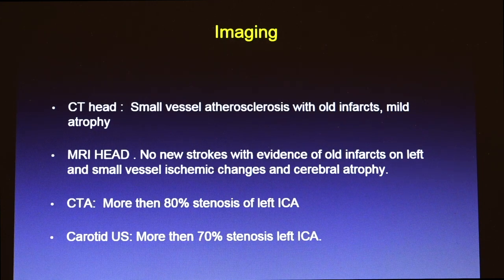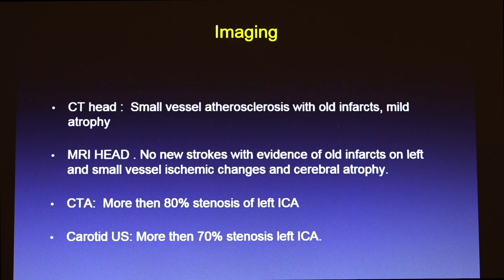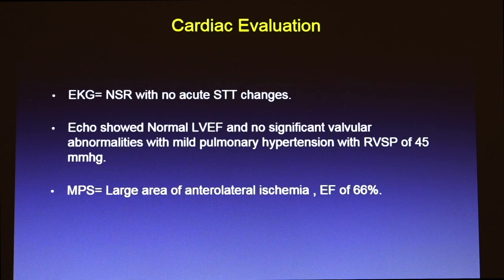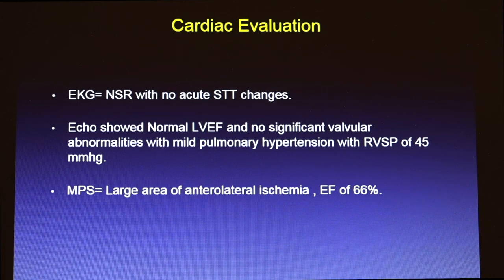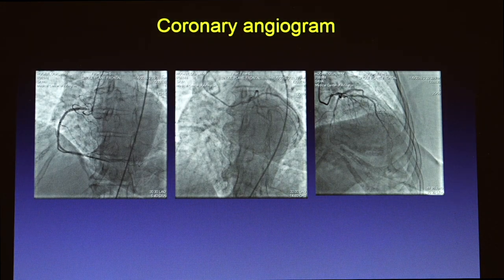CAT scan of the head showed no acute stroke. MRI suggested small vessel disease. CT angiogram of the neck suggested 80% stenosis of the left carotid artery, and ultrasound confirmed more than 70% stenosis. EKG showed no acute ST changes. Echocardiogram showed normal ejection fraction with mildly elevated right-sided pressures. A nuclear stress test was requested because vascular surgery was consulted for possible carotid endarterectomy, and it suggested a large area of anterior, lateral, and inferior ischemia with ejection fraction of 66%.